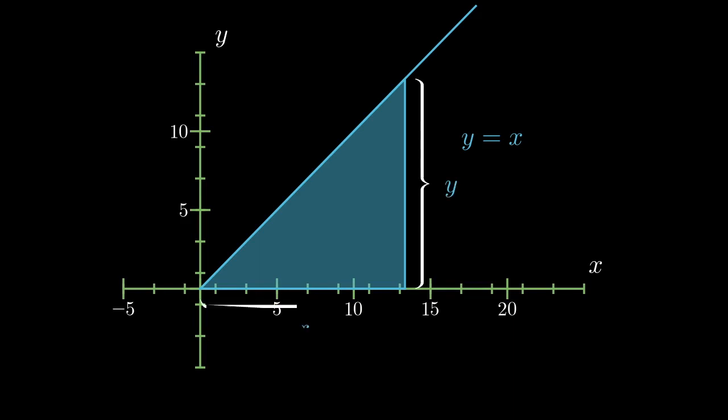In this case, the area forms a triangle of height y and width x. And we know the formula for the area of a triangle. It's one half the base times the height, which in this case is one half x times y. Or since y equals x, we can just say one half x times x, or x squared.